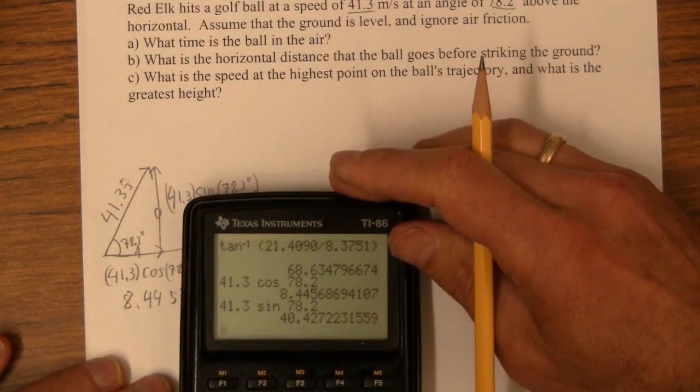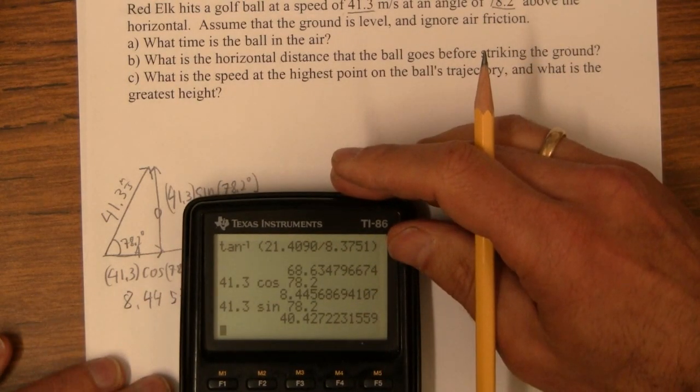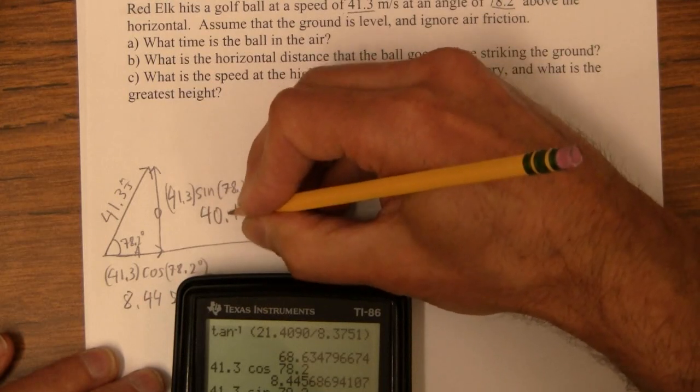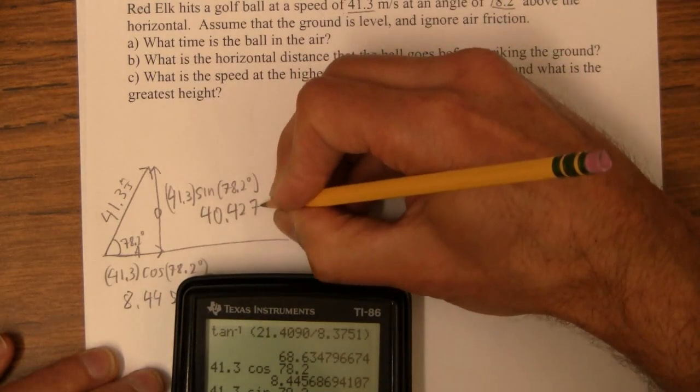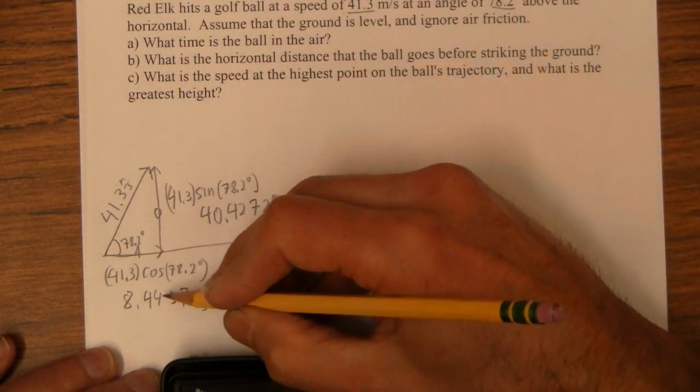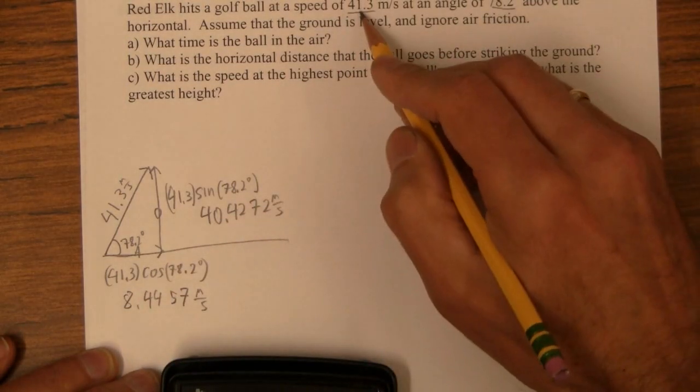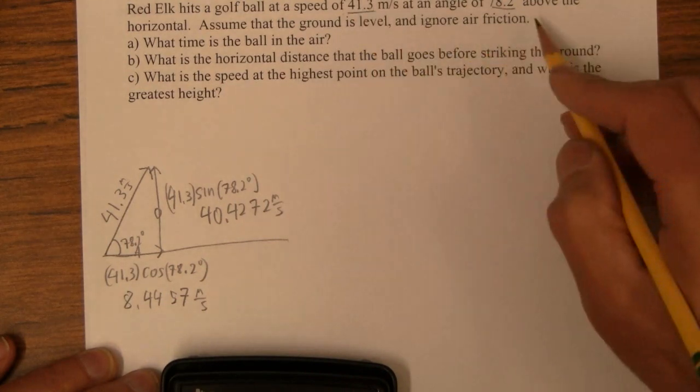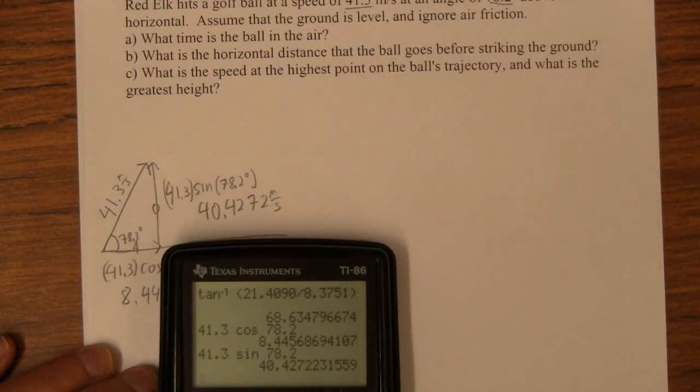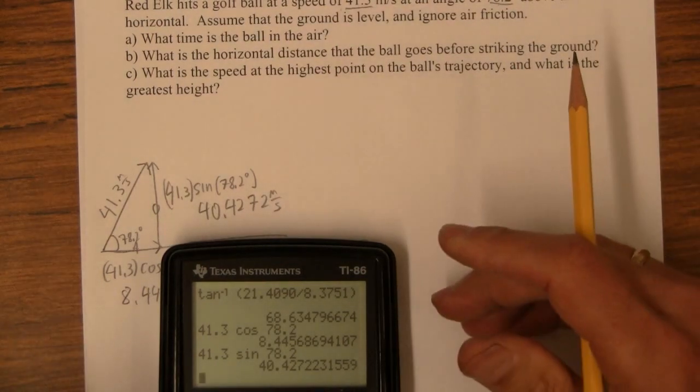And then for the sine, I get 40.4272. Now notice that I'm carrying like five sig figs here. We've got three sig figs here. If I carry five, I should be good. So that's the velocities like that.